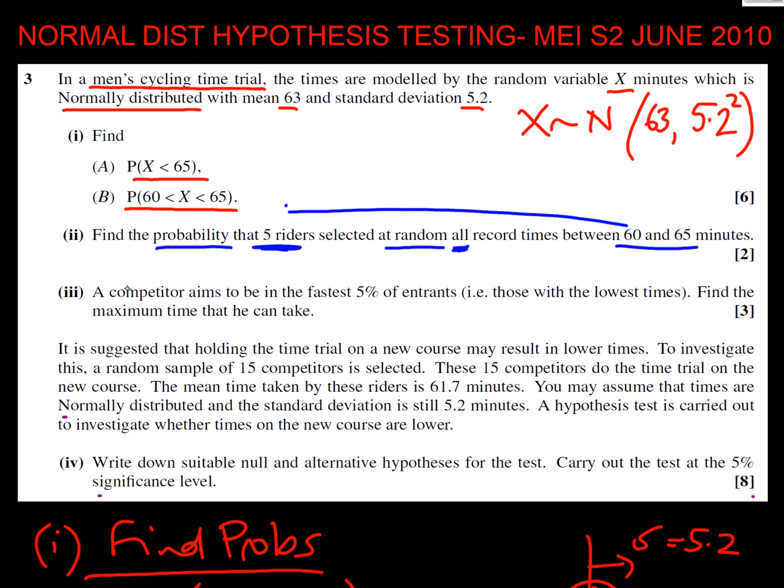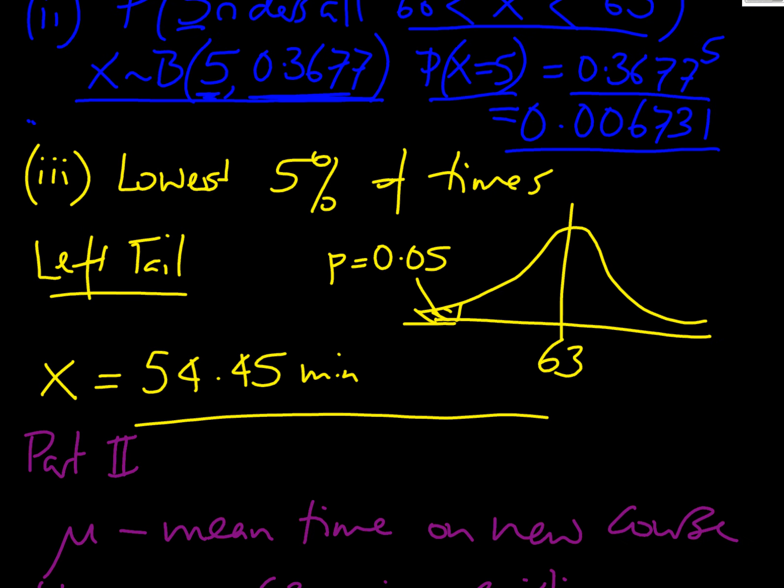Flying along now. We'll look at the next part three. A competitor aims to be in the fastest 5%, always worth reading this every word, i.e., those with the lowest times. You could, if you're in a hurry, just be looking at the top end, but we're actually interested in the lowest time. And then it says find the maximum time that he can take. So lowest, we're interested in the lowest 5%. We've got a mean of 63, and we're interested in this bottom end where the area is 0.05.